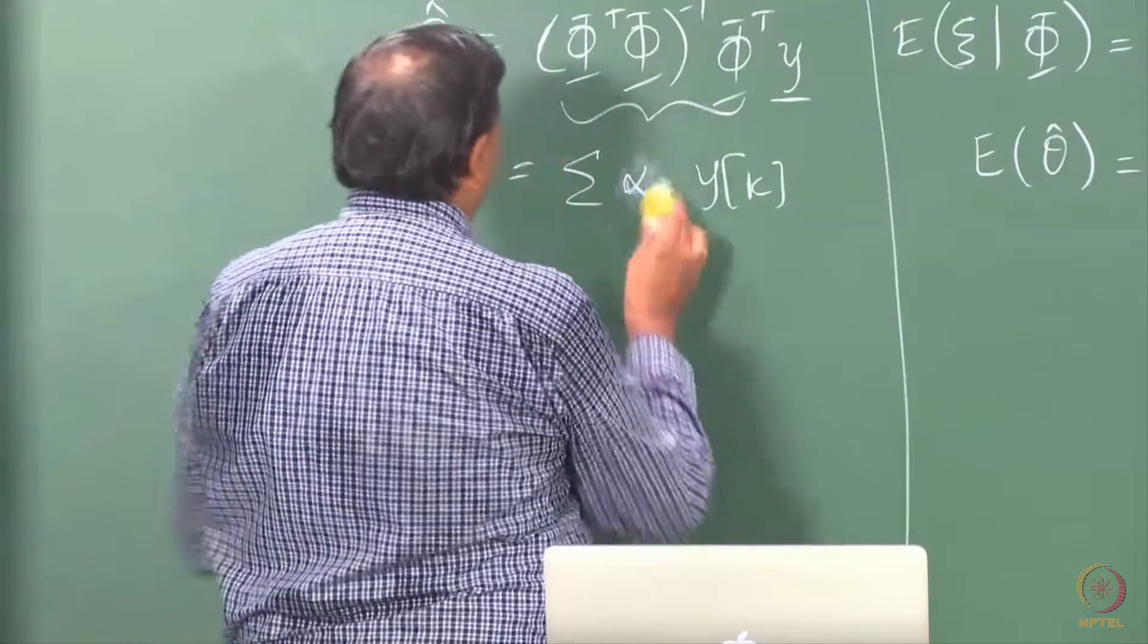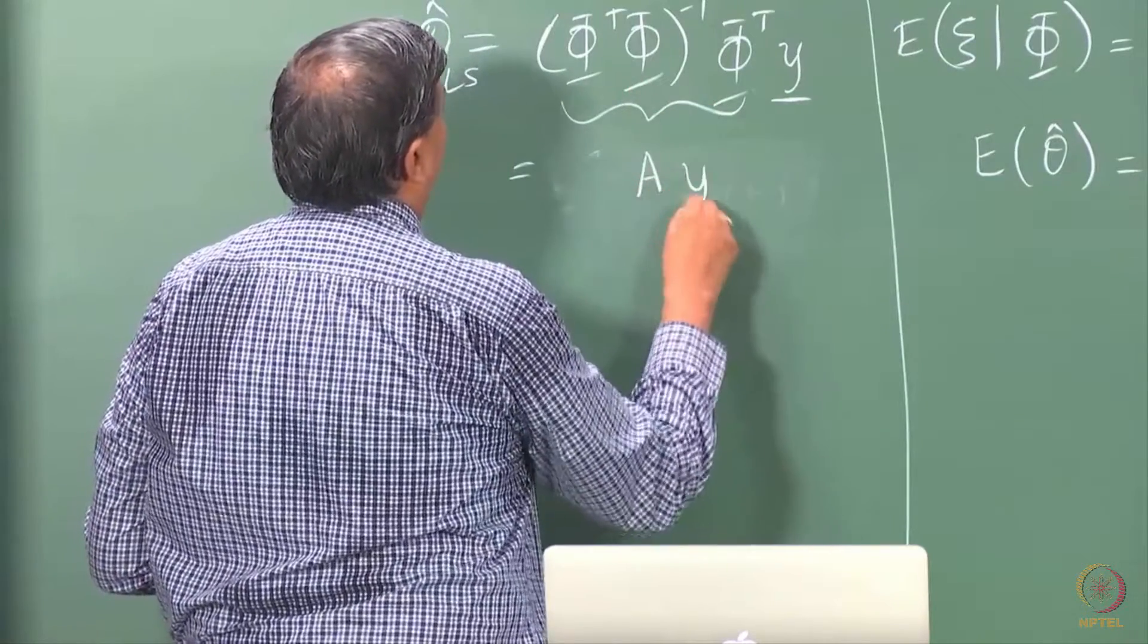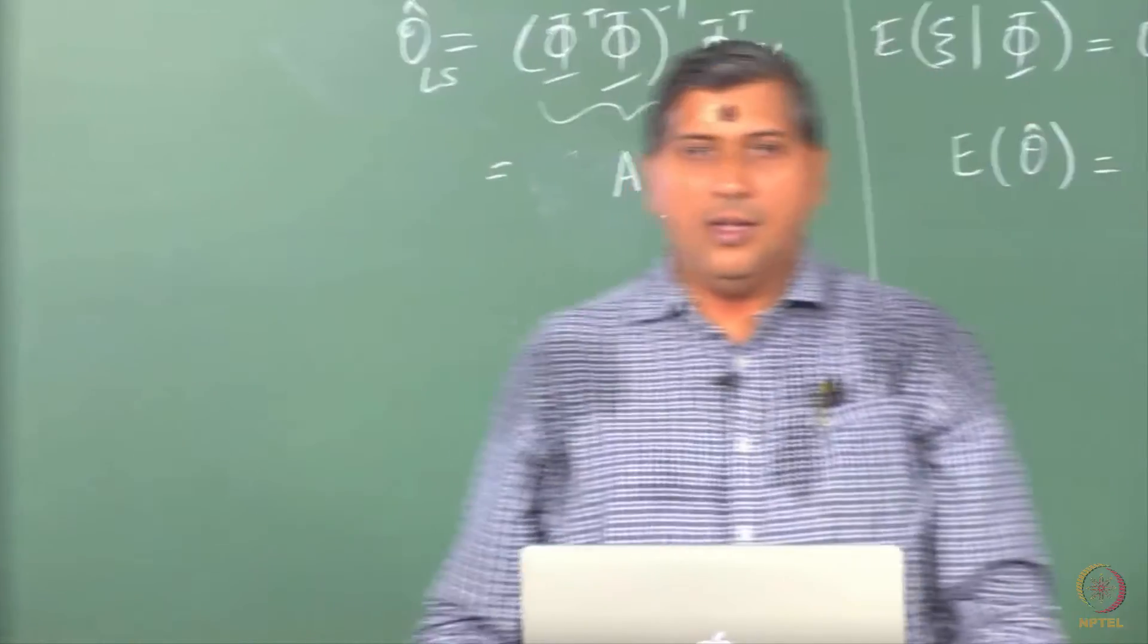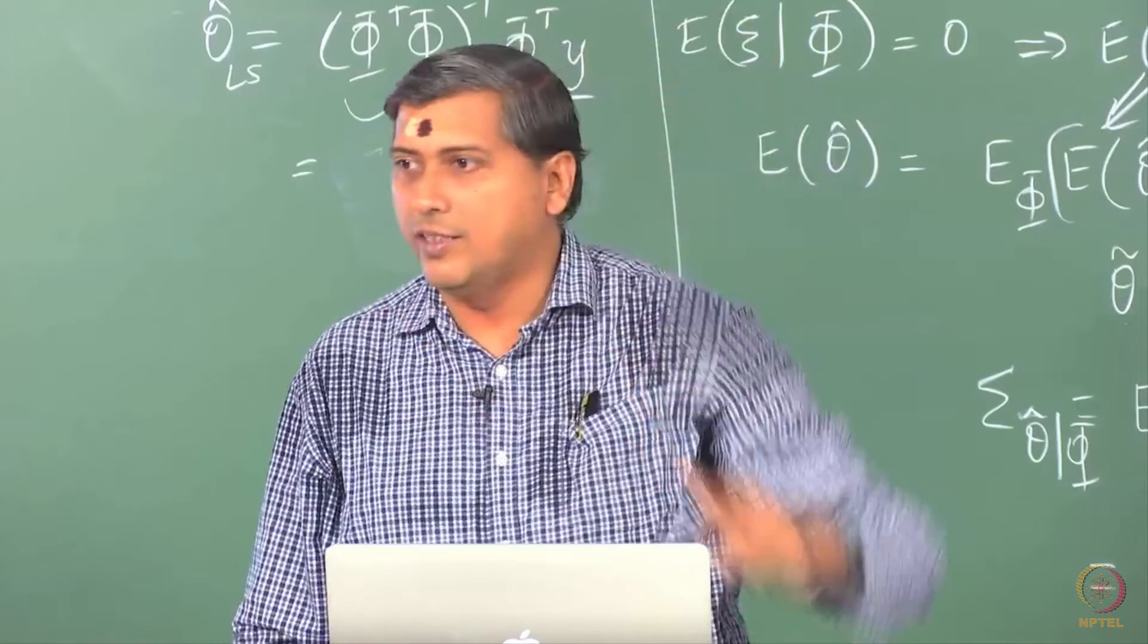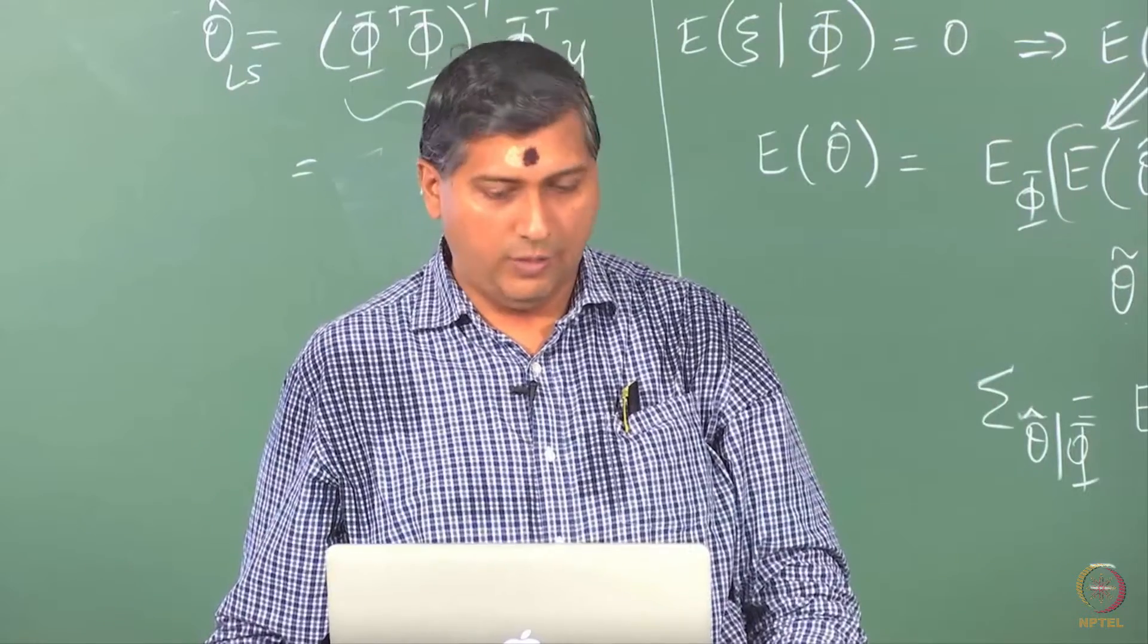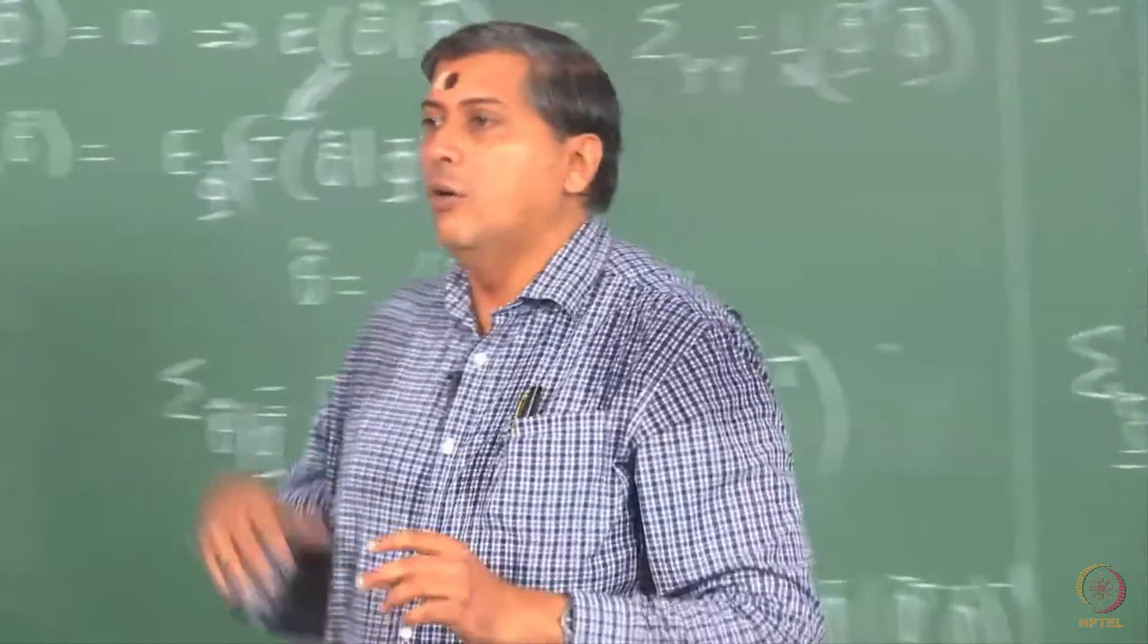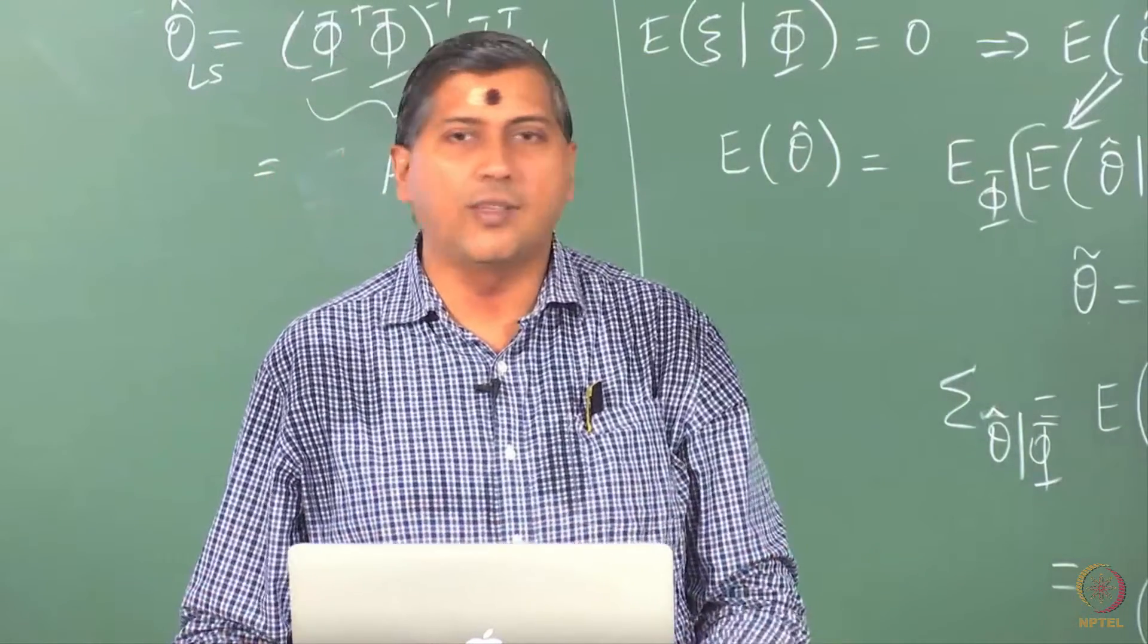Let me probably even write this as simply sum A times y. So that A is a matrix. That is phi transpose phi inverse times phi transpose. That is nothing but your pseudo inverse. So you can see straight away that if y has Gaussian errors, that means if your z is Gaussian distributed jointly, then theta hat is also jointly Gaussian distributed. On the other hand, if the data has non-Gaussian errors, then only asymptotically theta hat has a Gaussian distribution. That is by virtue of the central limit theorem.